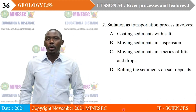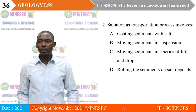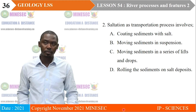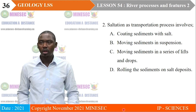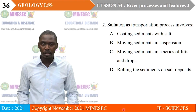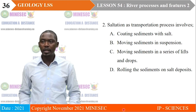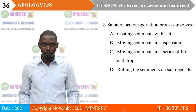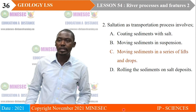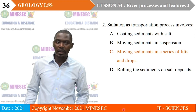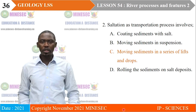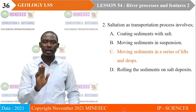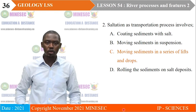Exercise two: Saltation as a transportation process involves — A. Coating sediments with salt, B. Moving sediments in suspension, C. Moving sediments in a series of leaps and drops, D. Rolling the sediments on salt deposits. Our correct answer is C. Saltation is derived from the Latin word 'salte,' implying to jump — during saltation, sediments are given a series of leaps and drops as the current moves.